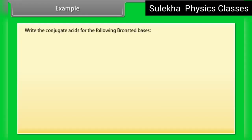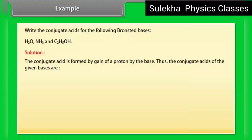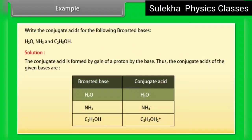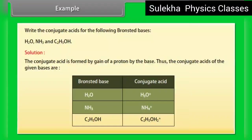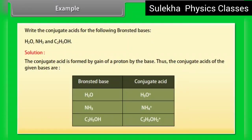Example: write the conjugate acids for the following Bronsted bases — H2O, NH3, and C2H5OH. The conjugate acid is formed by gain of a proton by the base. Thus, the conjugate acid of H2O is H3O+; the conjugate acid of NH3 is NH4+; and the conjugate acid of C2H5OH is C2H5OH2+.